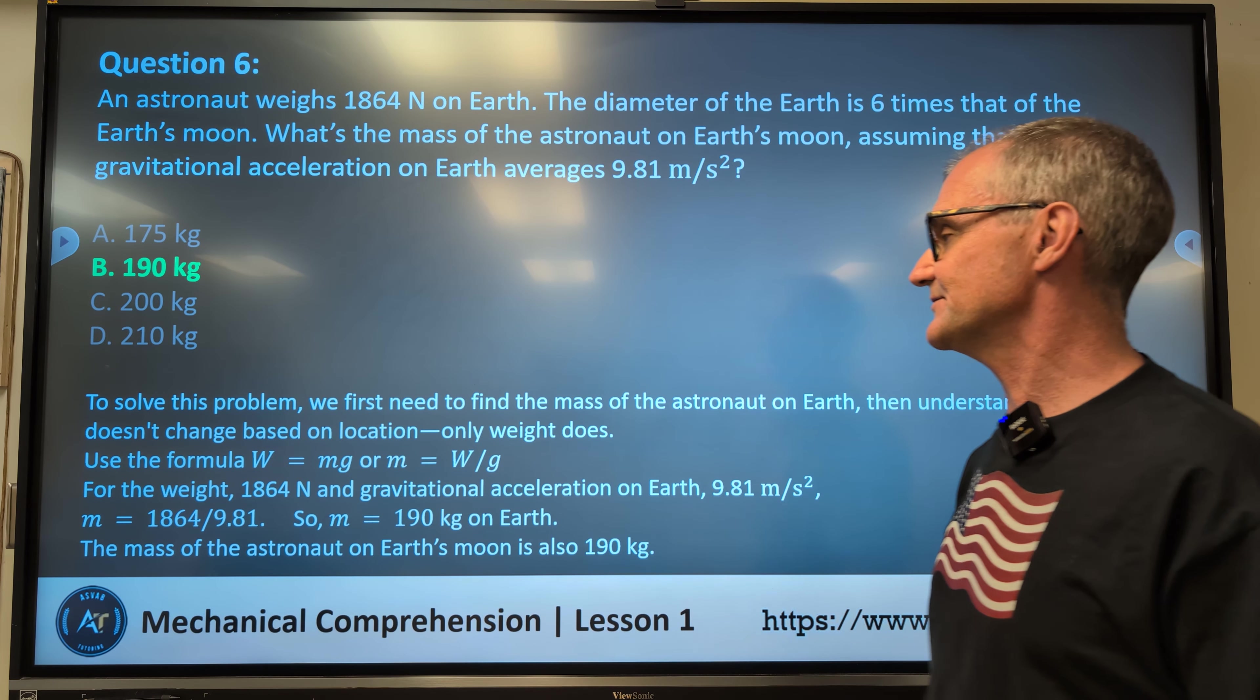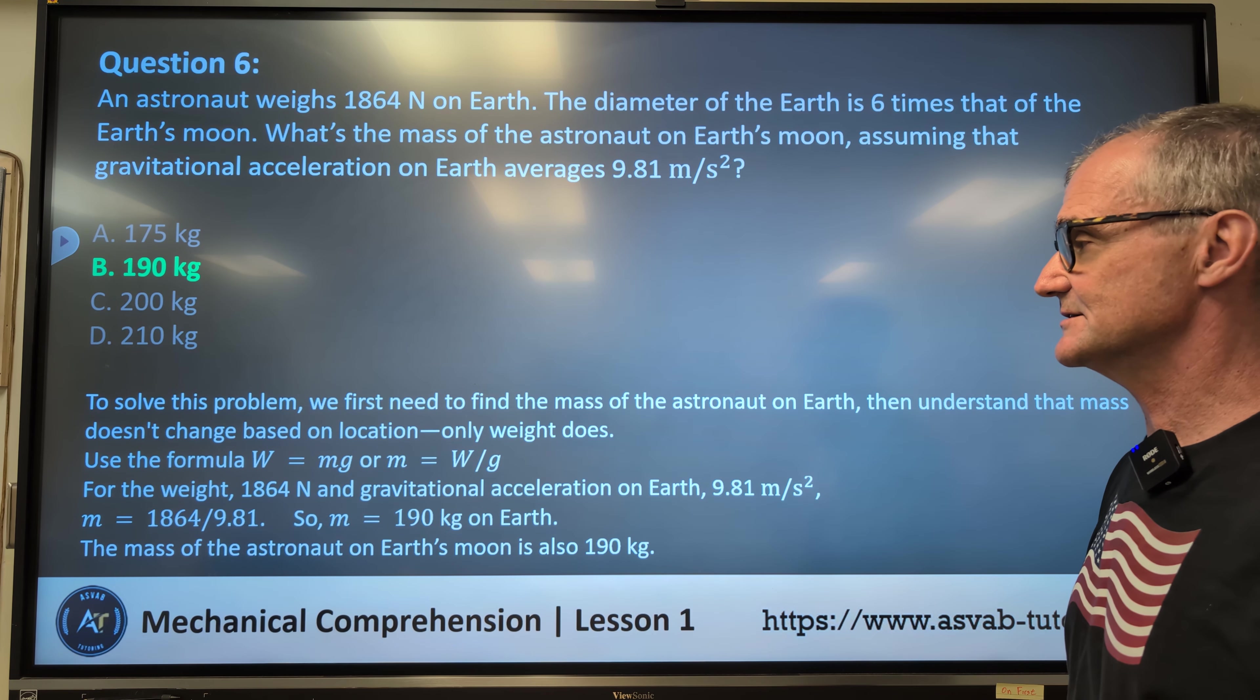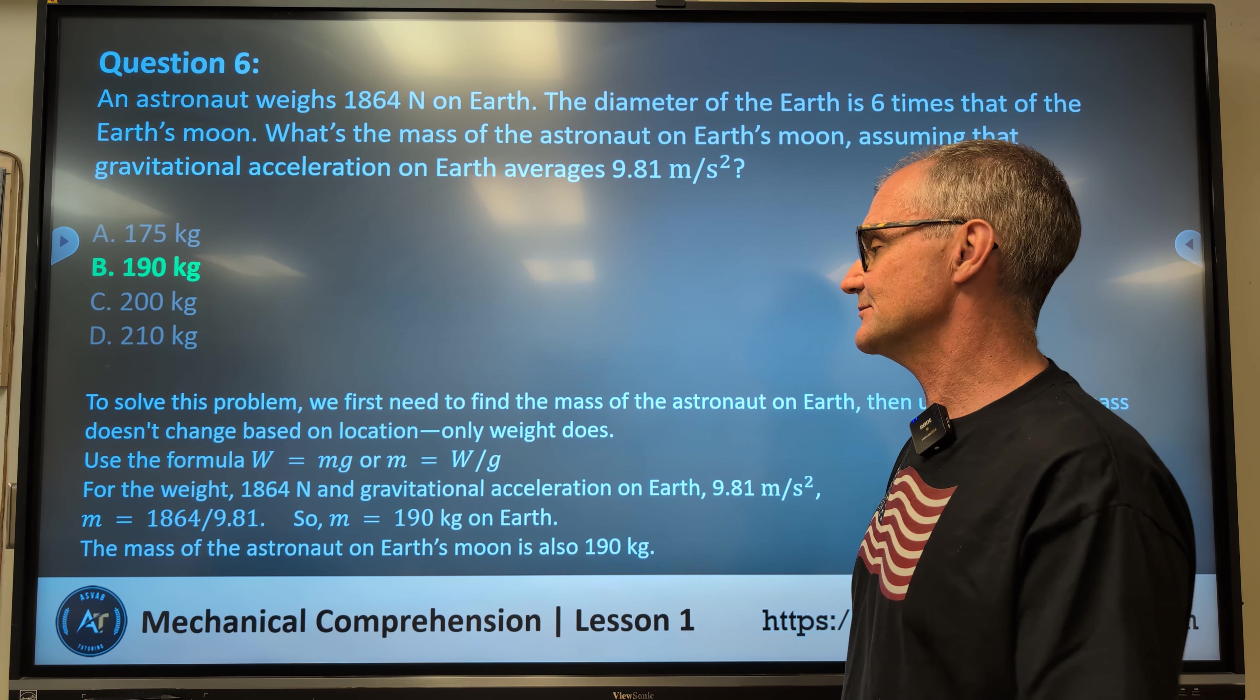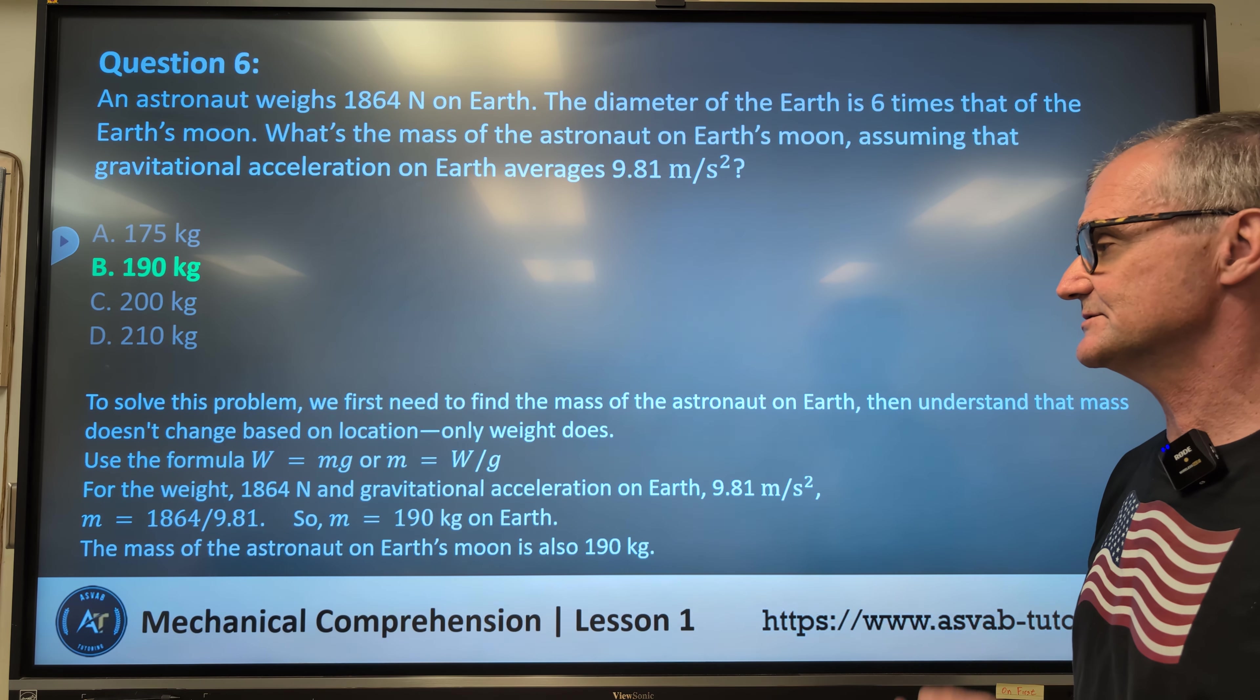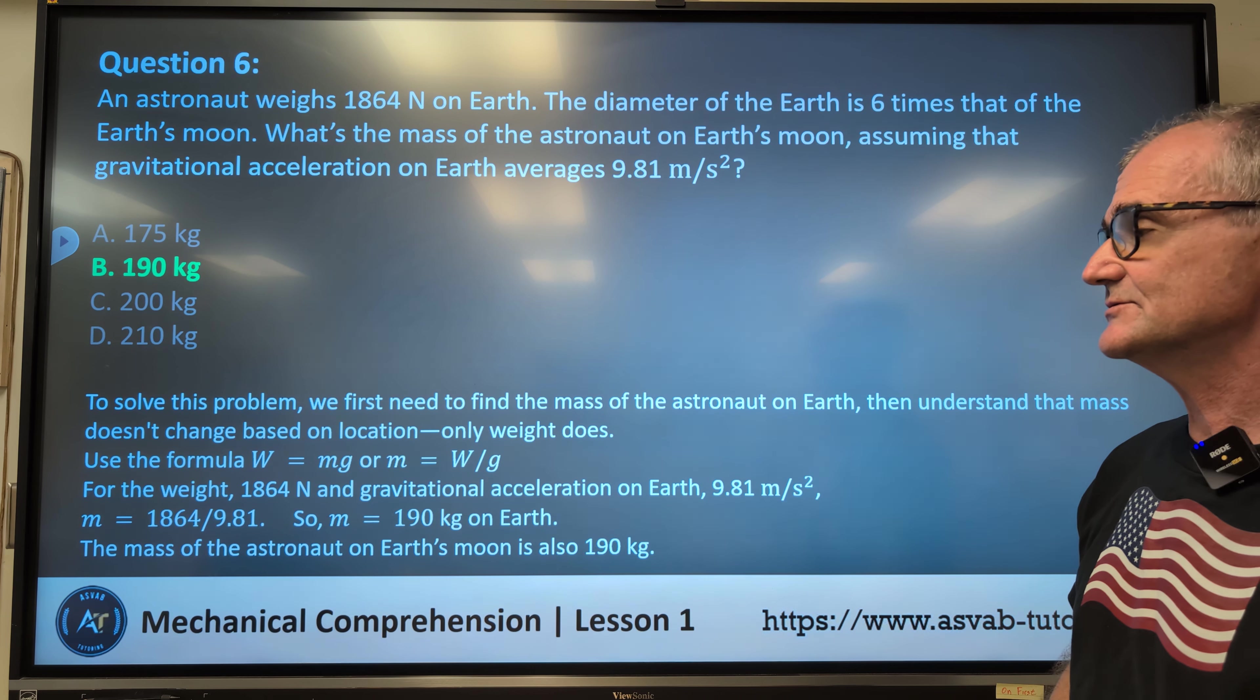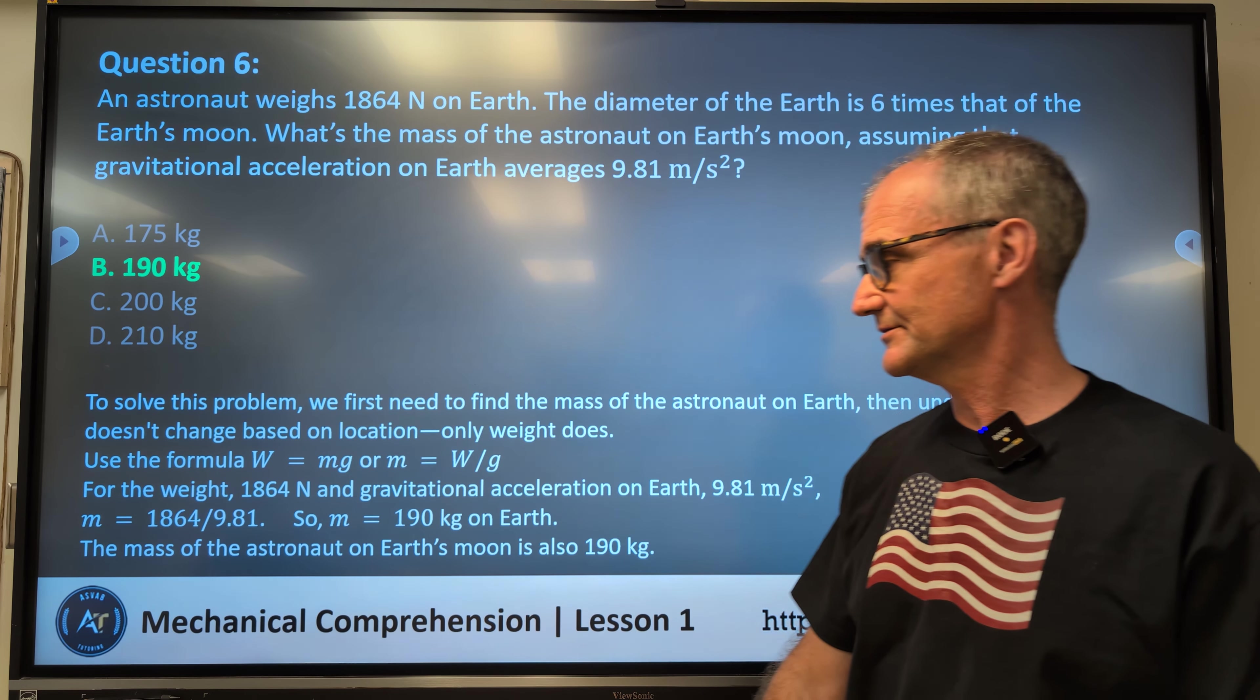To solve this problem, we first need to find the mass of the astronaut on Earth, and understand that mass doesn't change based on location. Only weight does. So we're going to use the formula W equals M times G, or M equals W over G. For the weight, 1,864 Newtons, and gravitational acceleration on Earth, 9.8. So I take that mass, that Newtons divided by the 9.8, and get 190 kilograms on Earth. That was a pretty hard one.